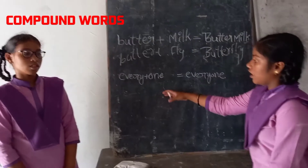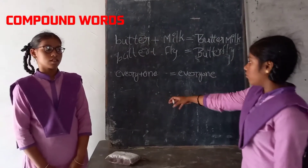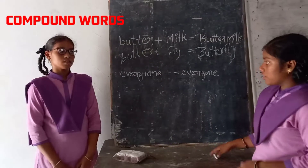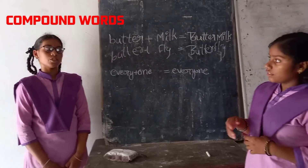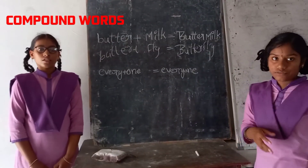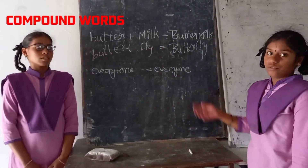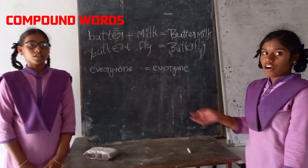Every is one word, one is another word. Then you put them together and the new compound word formed from them is everyone. That is a compound word.